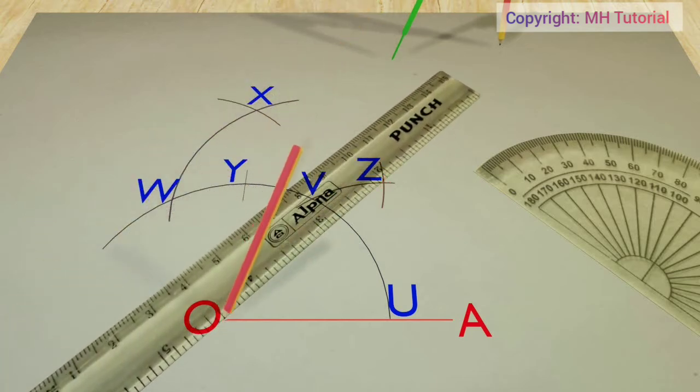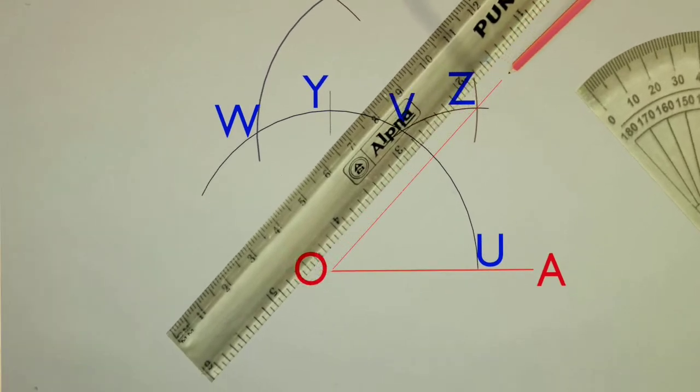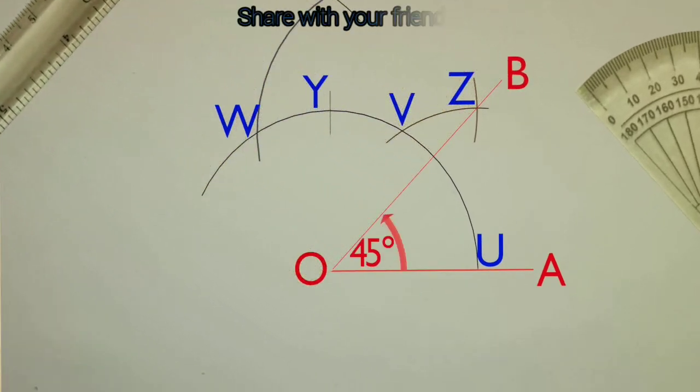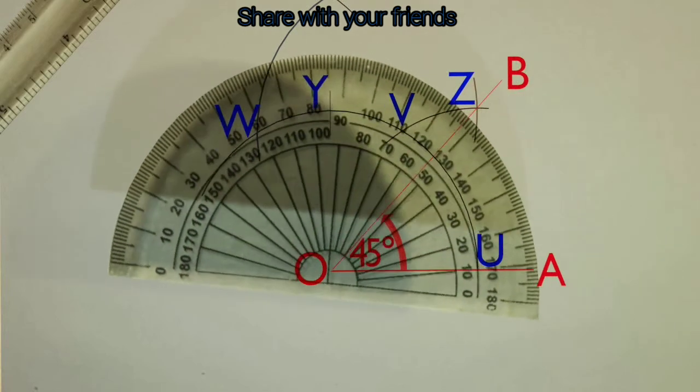Thus we get the required angle which is named angle AOB. To be sure we need to verify the practical value of the angle.